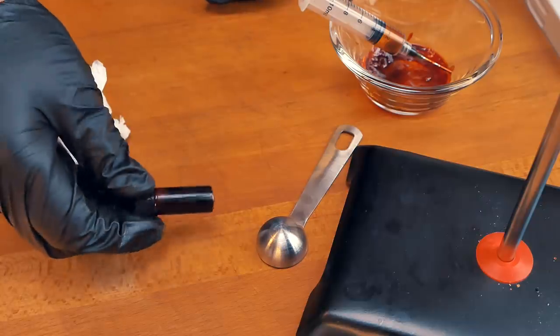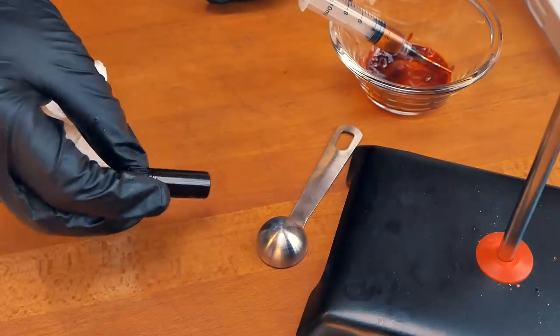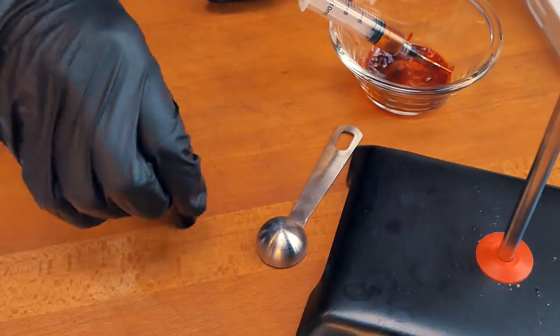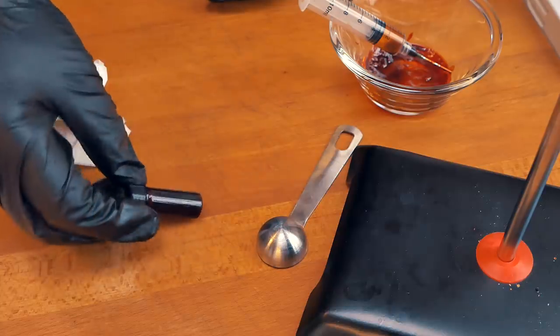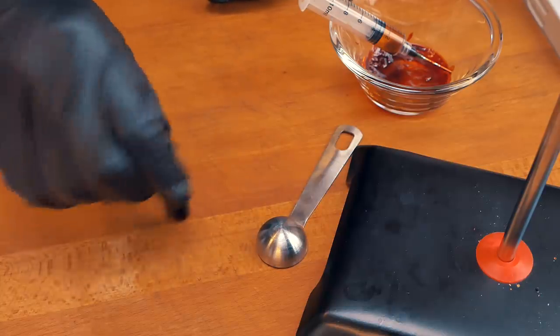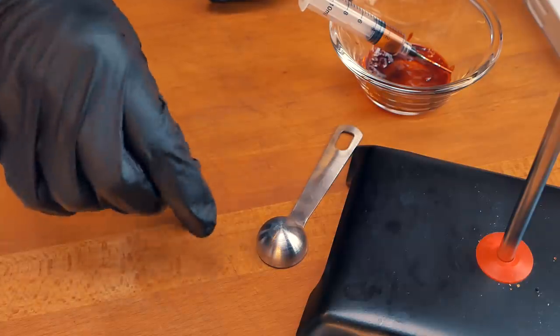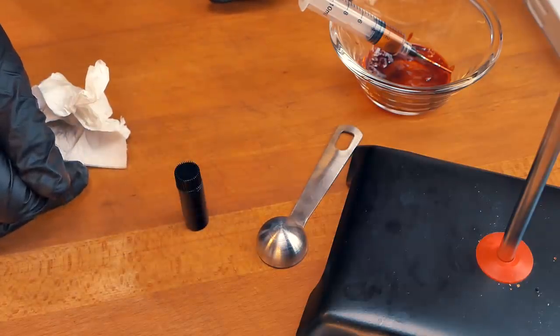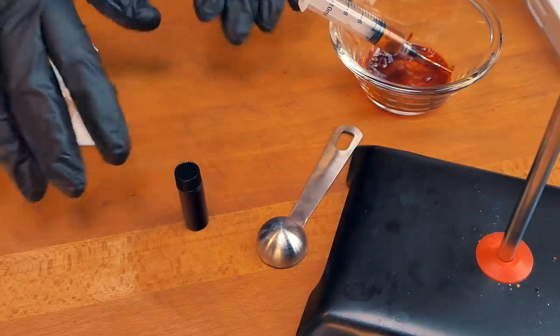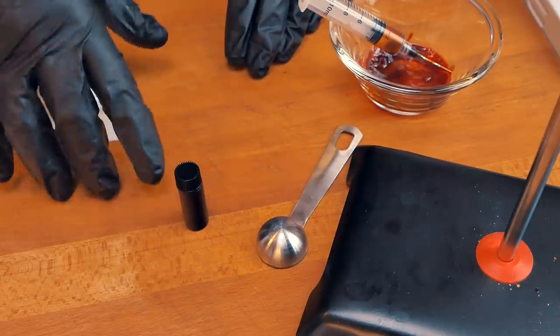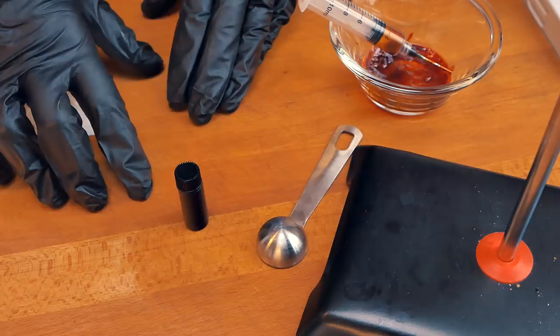So we finished bottling our capsaicin. This is from 20 grams of dried scorpion pods. And yeah, this stuff is really dangerous. Honestly, if you are doing this, don't underestimate just how painful this stuff is going to be.